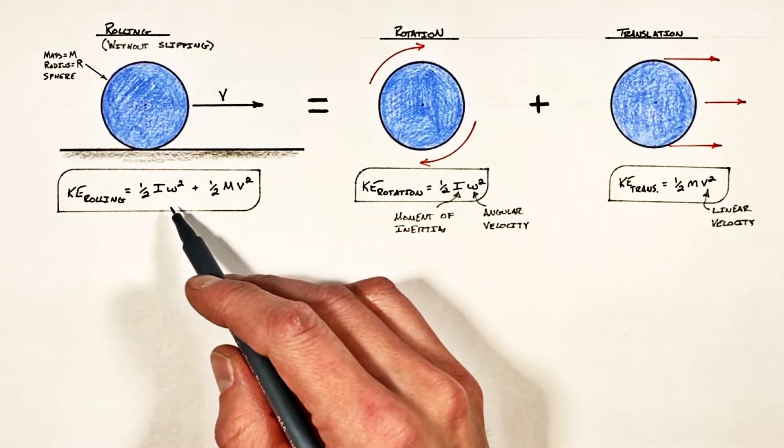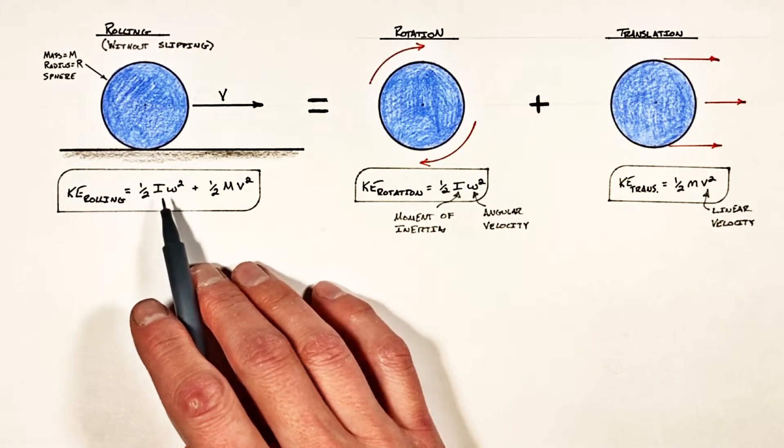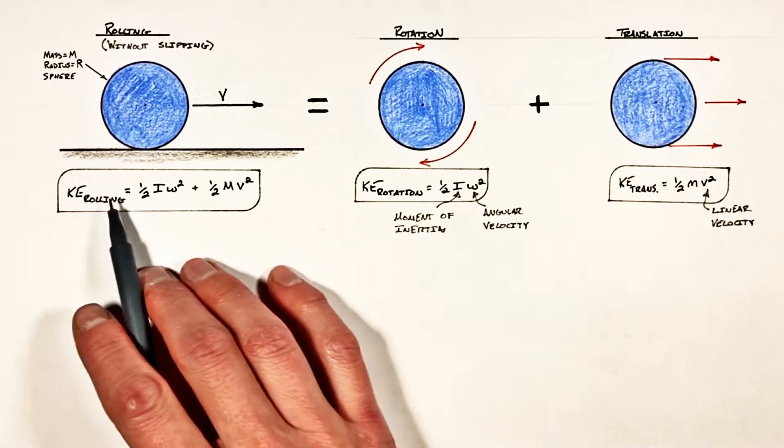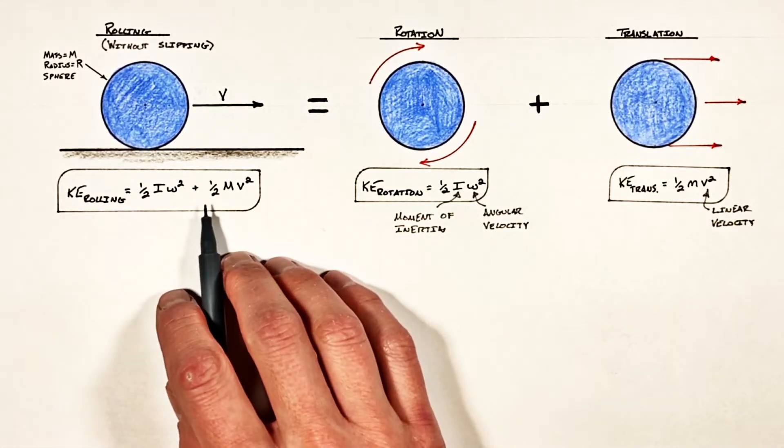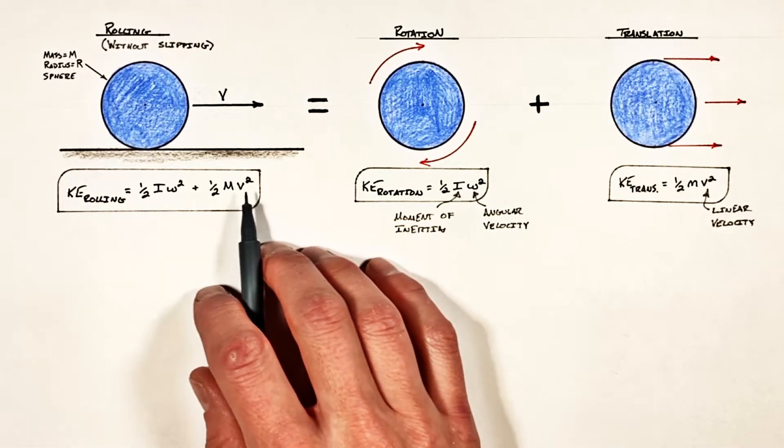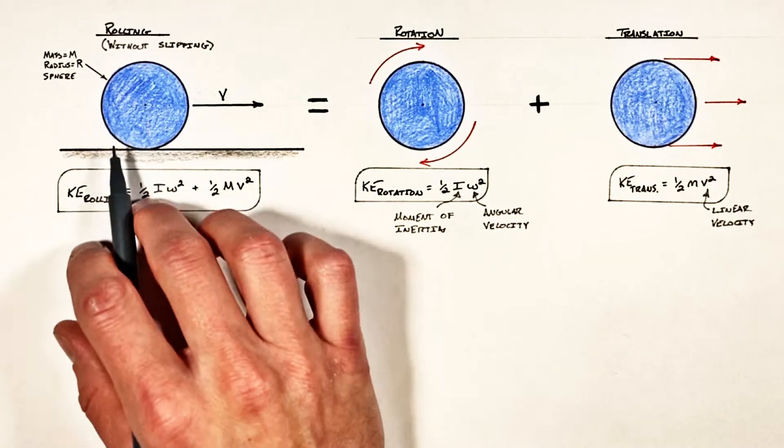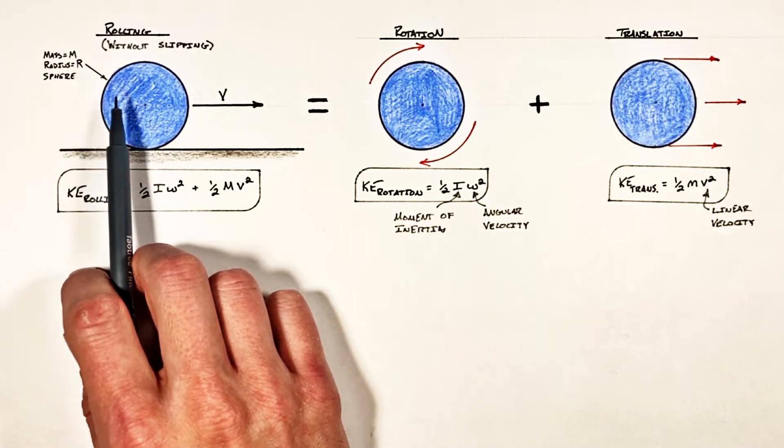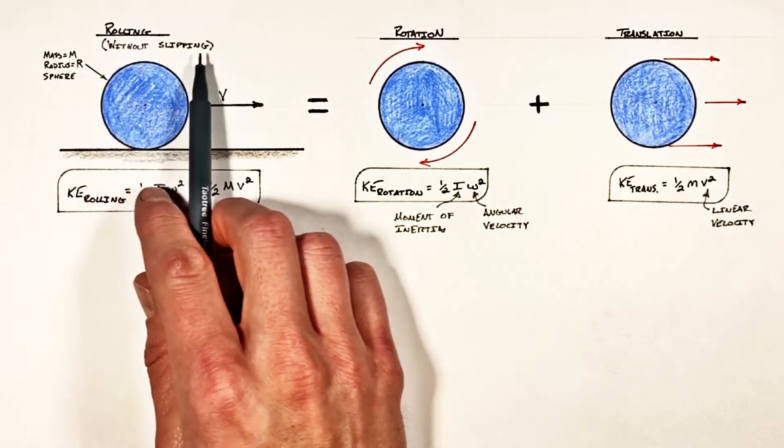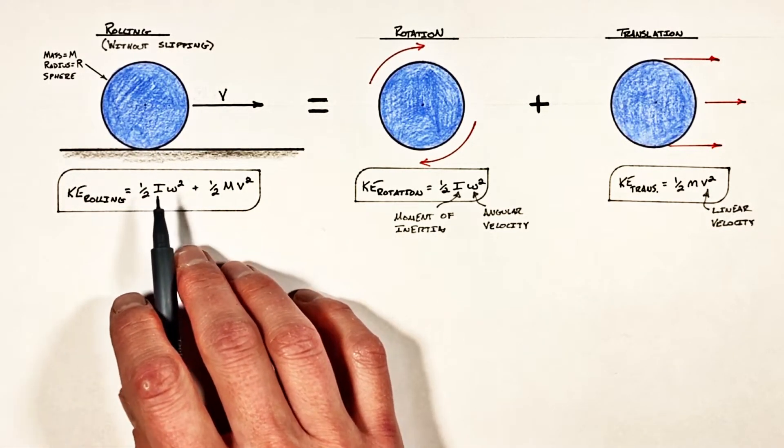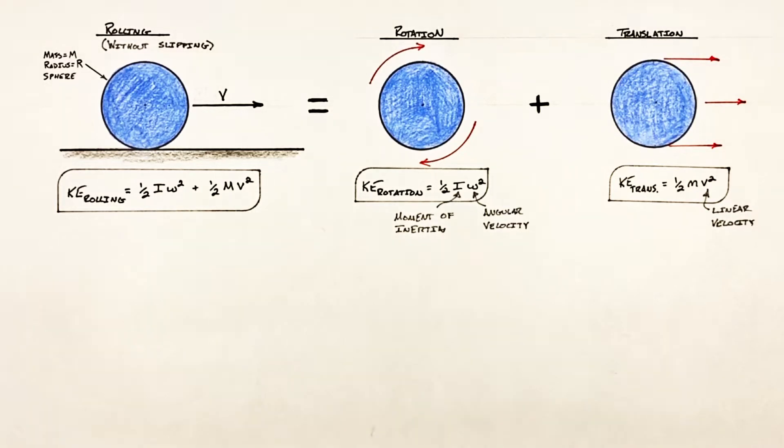Now there's one issue with this equation as it appears, and that is that we have both angular velocity and linear velocity in this function. So before we can actually use this equation, we need to relate the angular velocity to the linear velocity of this rolling object. Now going way back to the beginning, we said this sphere was going to roll along without slipping, and because it's rolling without slipping, we can create a relationship between the angular and linear velocities.